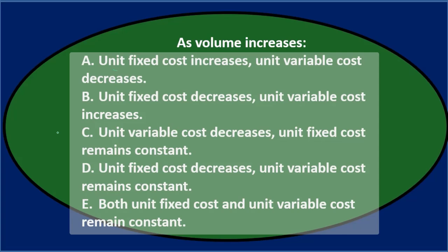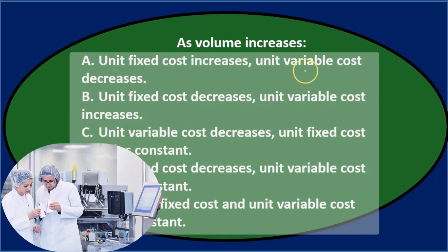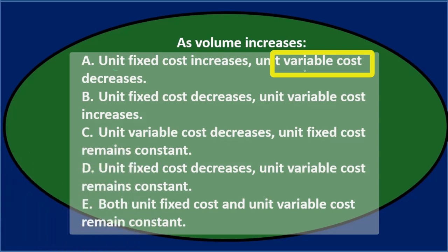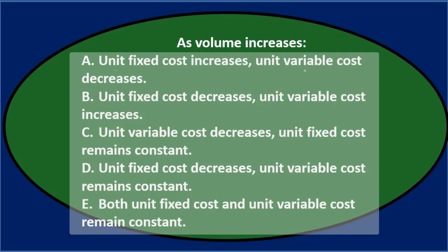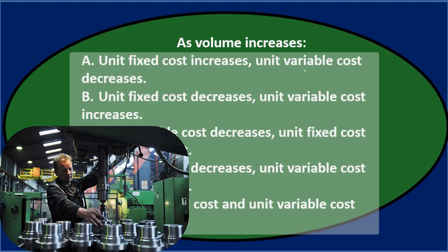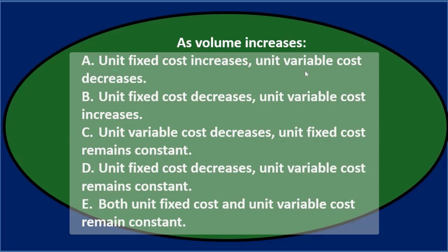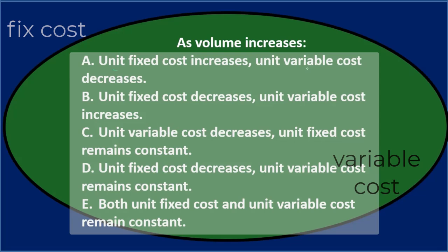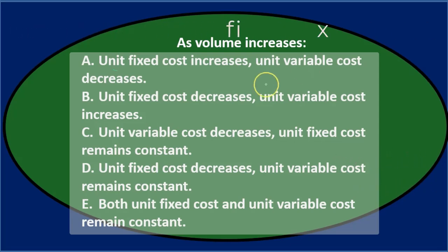When we have an increase in production level, variable costs actually remain constant on a per-unit basis. As production goes up, variable costs stay constant per unit. The fixed costs actually decrease per unit, because the fixed costs are fixed — and as we produce more units, the per-unit fixed cost goes down with each unit of production. That seems counterintuitive given the names, because you'd think variable costs would change and fixed costs would remain the same — however, that's with regard to totals, and here we're talking about unit costs.